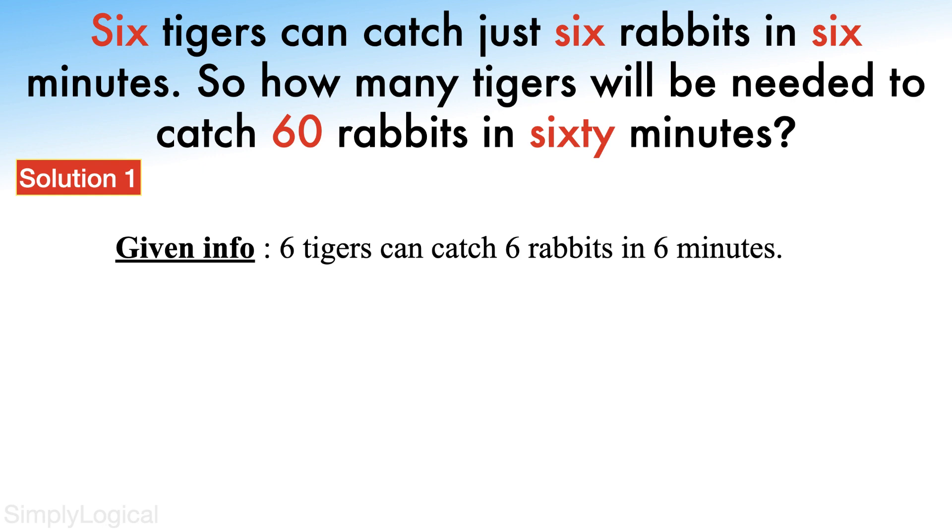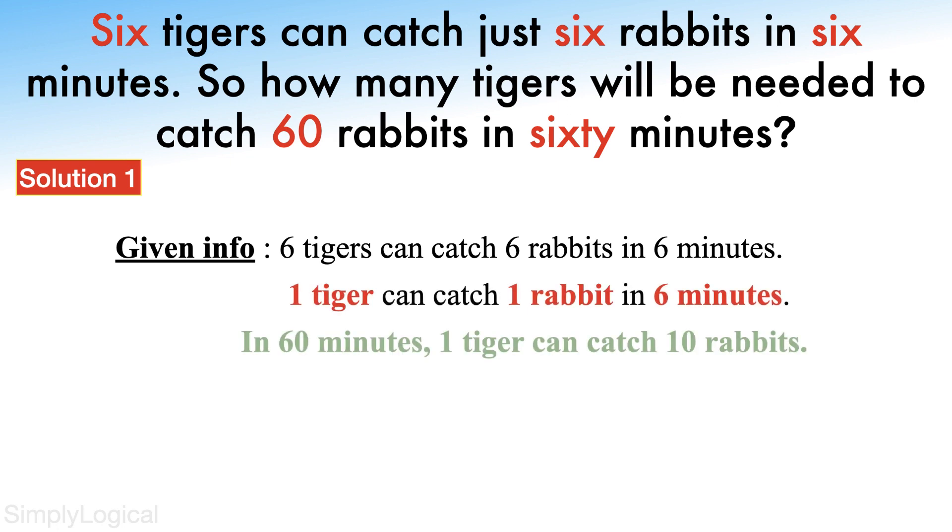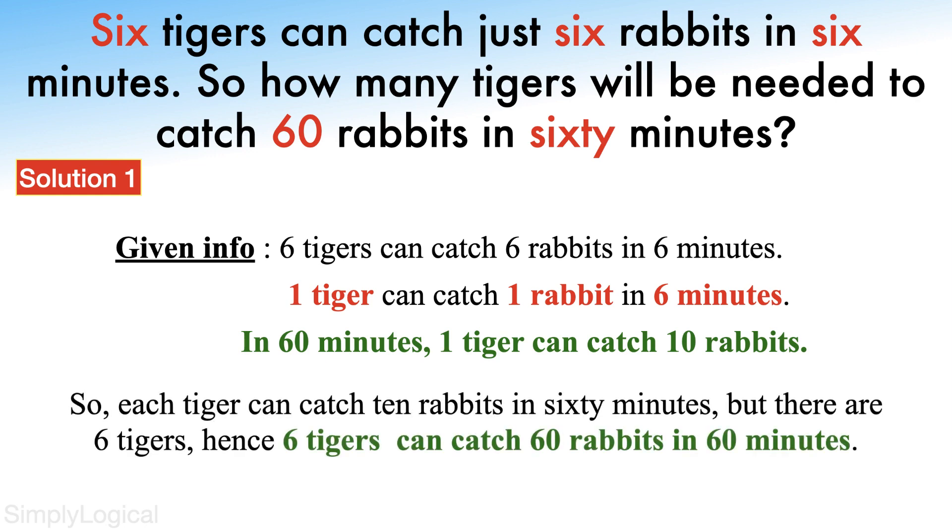According to this statement, one tiger can catch one rabbit in six minutes. In 60 minutes each tiger can catch 10 rabbits. So each tiger can catch 10 rabbits in 60 minutes, but there are six tigers. Hence six tigers can catch 60 rabbits in 60 minutes.